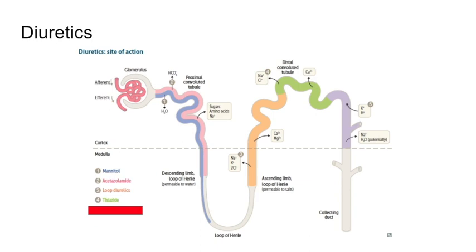Finally, number five, which is inhibiting potassium and hydrogen, keeping them out of the nephron. So you're inhibiting that channel and keeping potassium and hydrogen out of the nephron. Those are our potassium-sparing diuretics.